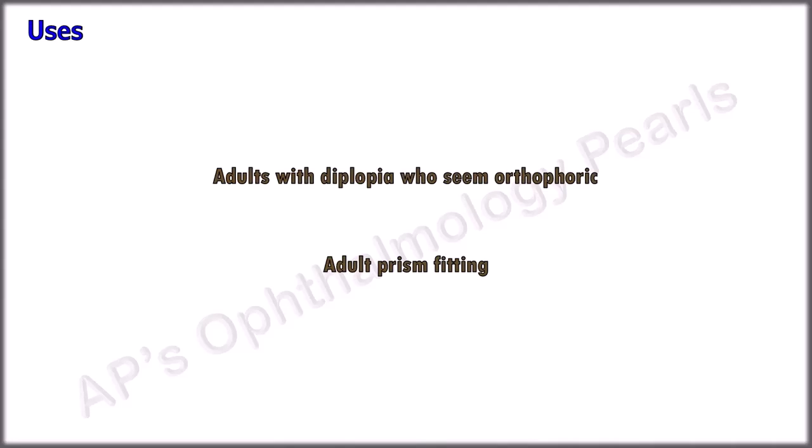Clinically, it is most useful to use the red glass test in adults who complain of diplopia but who seem orthophoric on cover testing. It is also a good way to fit adults with prisms. Testing children with a red filter can be difficult.